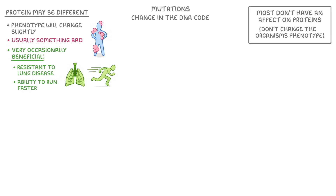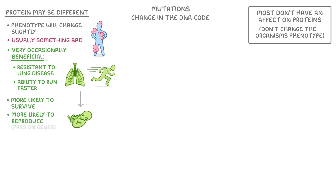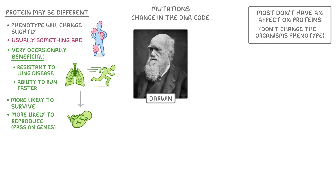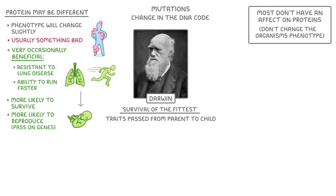These beneficial mutations mean that those individuals who have them are more likely to survive, and so they're more likely to be able to reproduce and pass on their genes to the next generation. This idea that the fittest individuals are more likely to survive was noticed by Charles Darwin in the 1800s, and he called it survival of the fittest. At the time, he didn't actually know anything about mutations or genes, but he did notice that certain traits were being passed on from parent to child, and that the most useful traits were passed on the most.